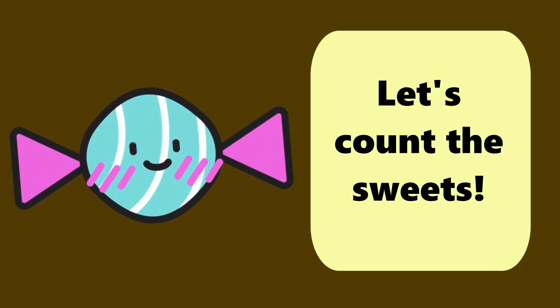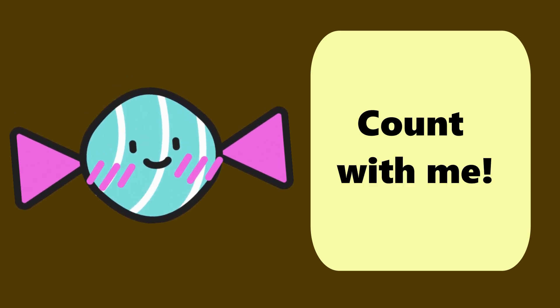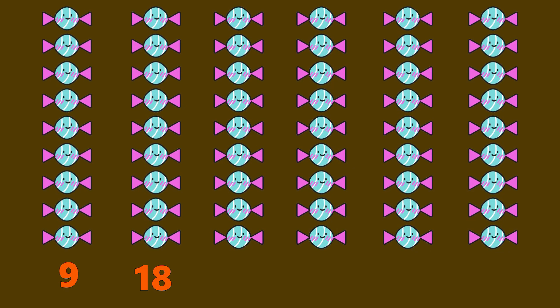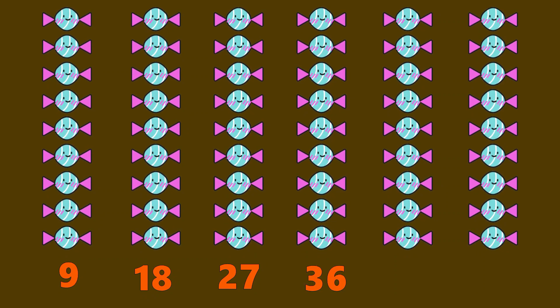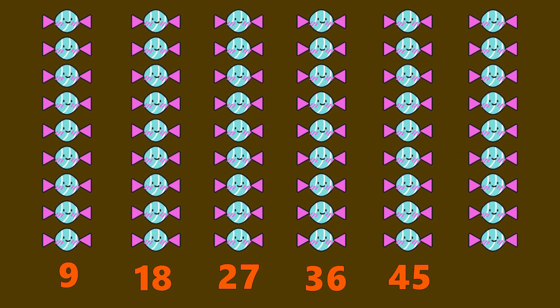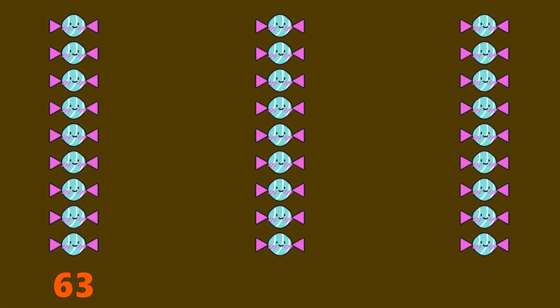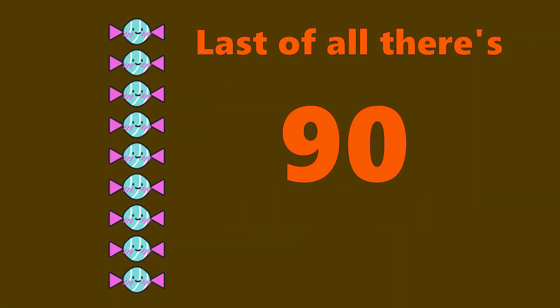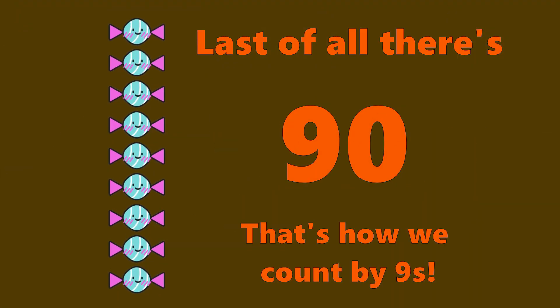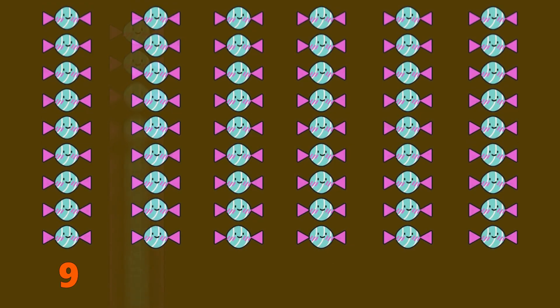Let's count the sweets. Count with me. 9 and 18, 27, 36, 45 and 54, 63 and 72, then that's 81, and last of all, there's 90. That's how we count by 9.